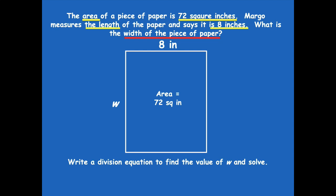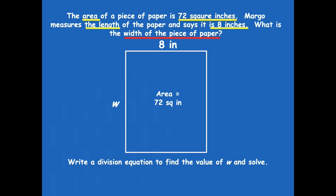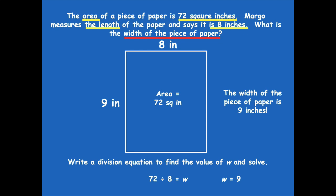Write a division equation to find the value of w and solve. Pause the video, solve the problem, then click play when you're ready. Here's the equation: 72 divided by 8 equals w, and w equals 9. You could check this using the finger trick for 9s — put down the 9th finger and you should have 72 modeled. So we replace w with 9, and the width of the piece of paper is 9 inches.